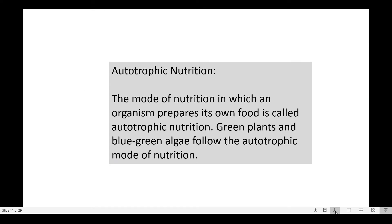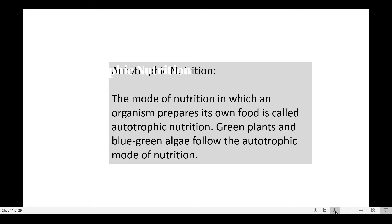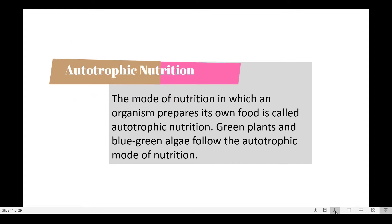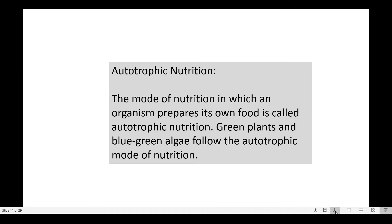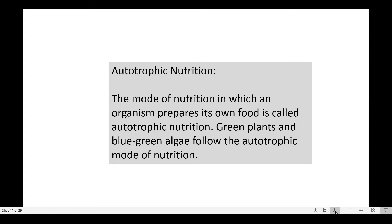Let's start with autotrophic nutrition. 'Auto' means self — it is the mode of nutrition in which an organism prepares its own food. All green plants as well as blue-green algae, which have chlorophyll, can produce their own food in the presence of sunlight. This is called autotrophic nutrition.